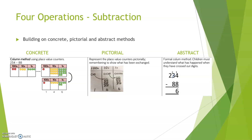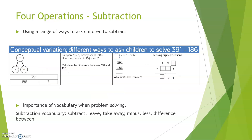For subtraction, we use exactly the same concrete, pictorial, and abstract approach. You can see how we go from the place value counters to drawing of the place value counters, and then move up to the abstract method — very similar to the way we did addition. And again, like addition, we use different variations in how we teach the fluency: word problems, part-wholes, and missing number problems. This is still a way of teaching subtraction, but it's not just one way.